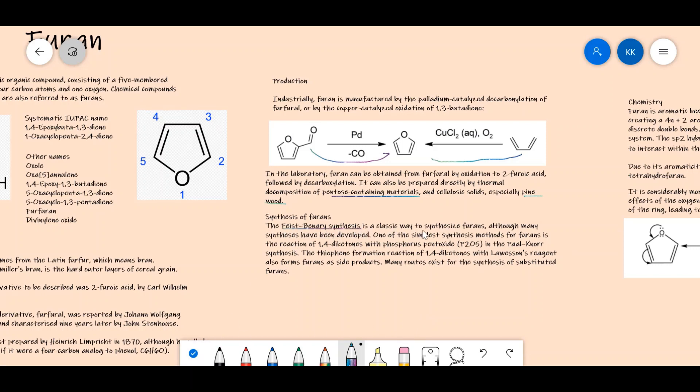Synthesis of furan has many procedures, such as the Feist-Benary synthesis. Many new ways have also been developed in recent days. One of the simplest synthesis methods for furan is the reaction of 1,4-diketones with phosphorus pentoxide. In the Paal-Knorr synthesis, the thiophene formation reaction of 1,4-diketone with Lawesson's reagent also forms furans as side products. Many routes exist for the synthesis of substituted furans as well.